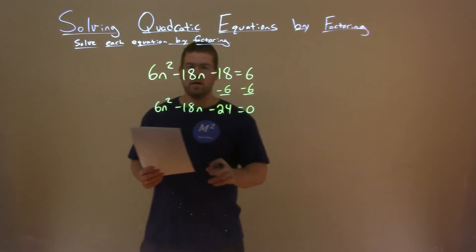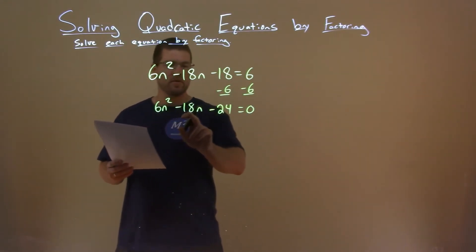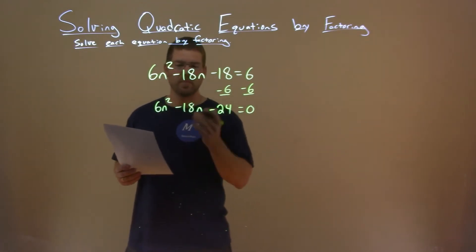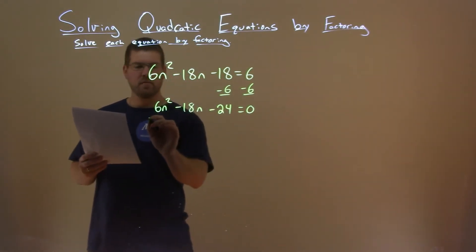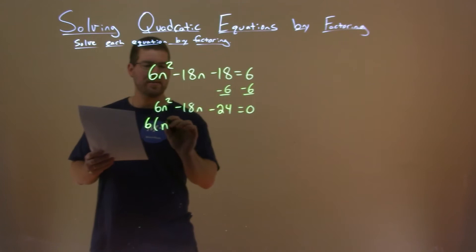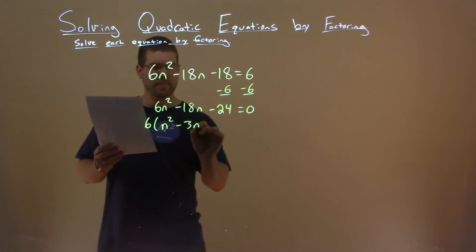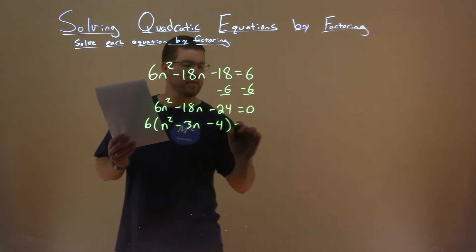Alright, well I notice here that 6 goes into each part here. So if we pull out a 6 here, we're left with n squared minus 3n minus 4 equals 0.